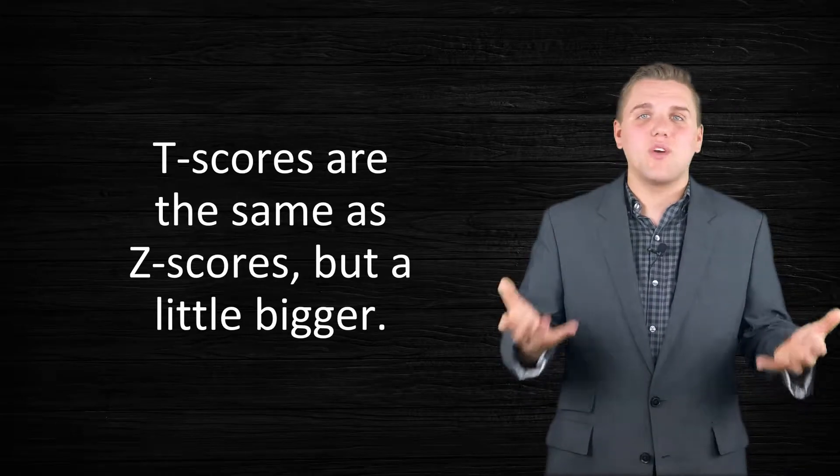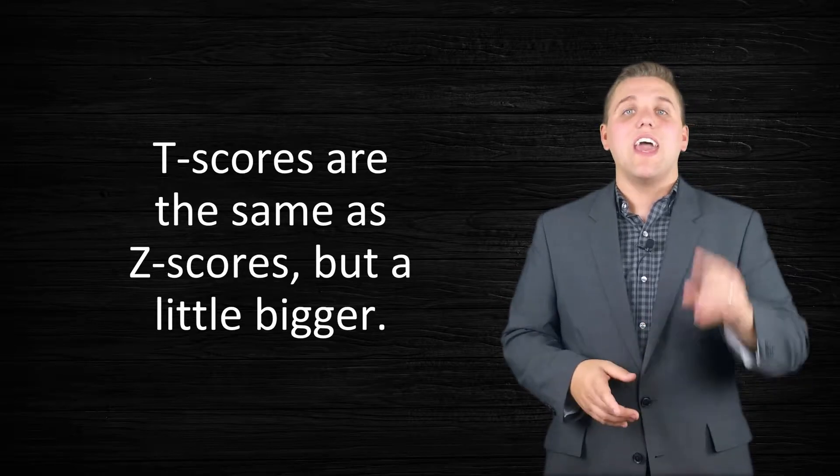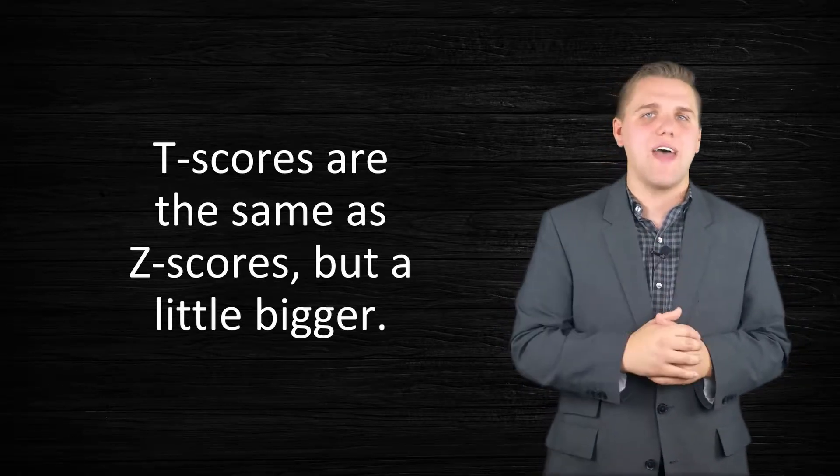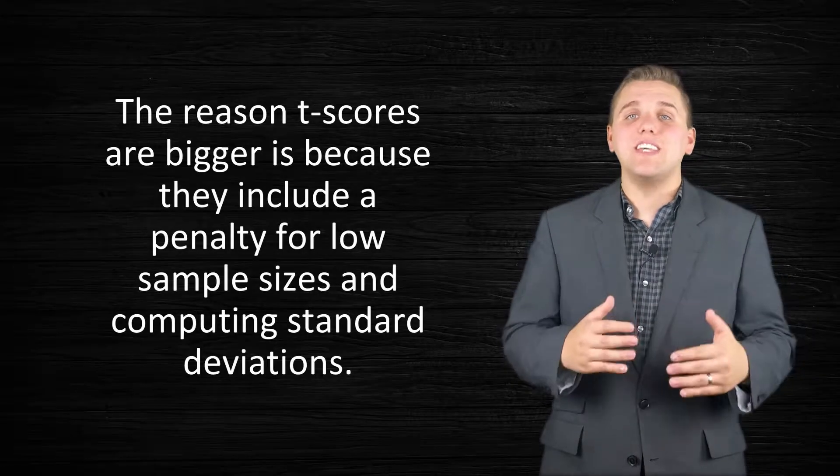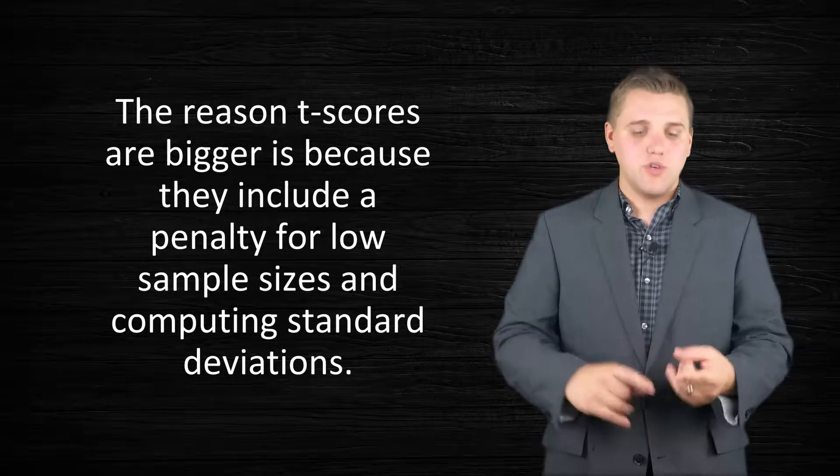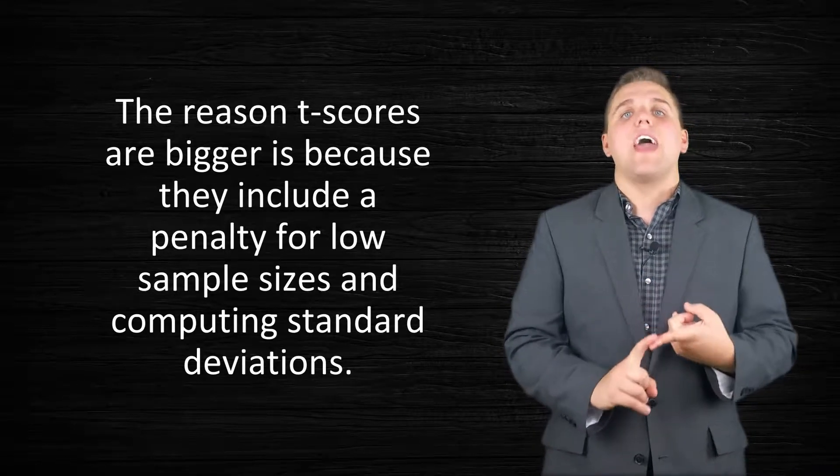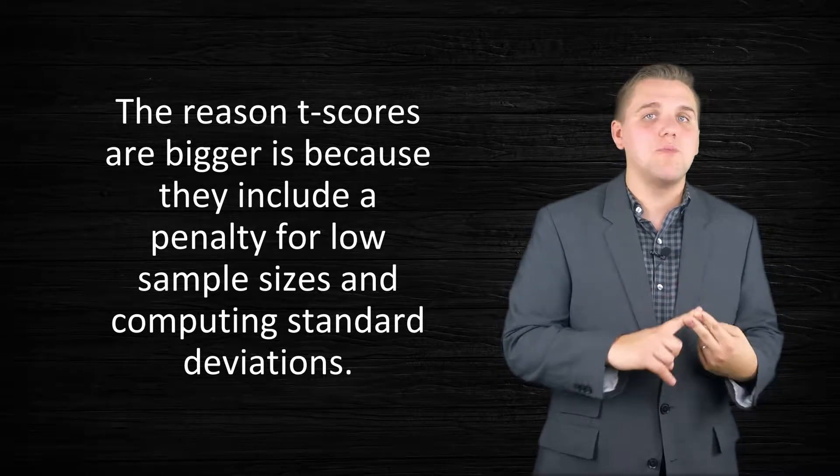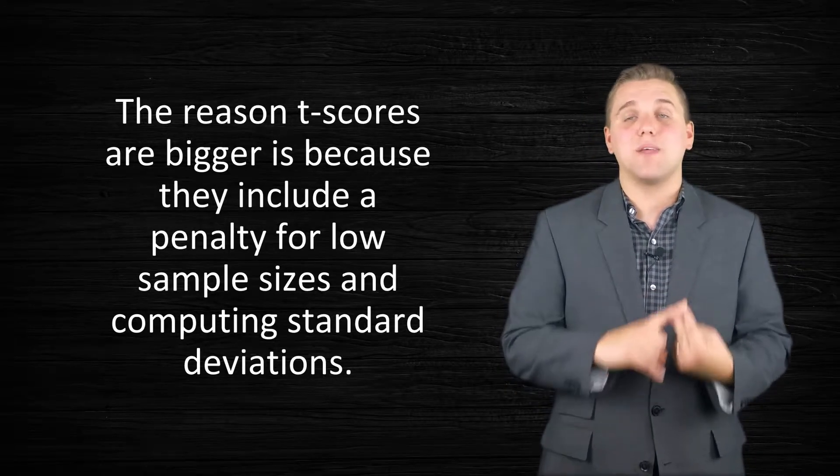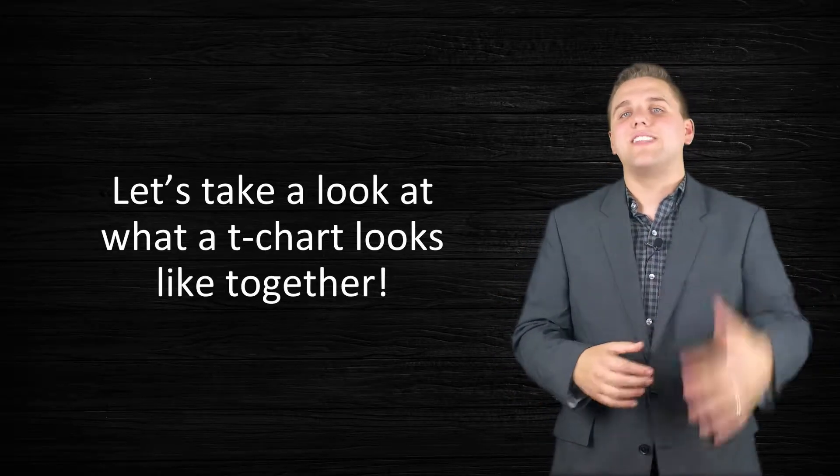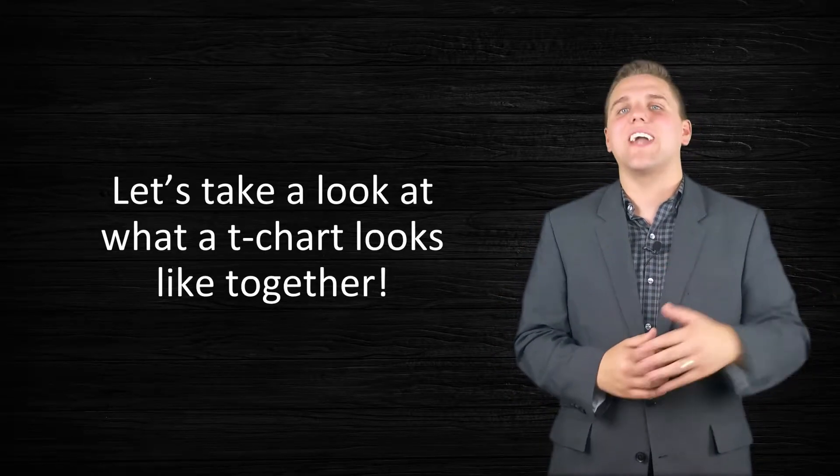Now, like I said, T-scores and Z-scores are really similar to each other, except that T-scores are a little bit bigger. Let's talk about that. The reason that T-scores are bigger is because they include a penalty for using a low sample size and for calculating the sample standard deviation and assuming that the sample standard deviation is the same thing as the population standard deviation. Now we're going to head over to the computer and take a look at a T-chart together.